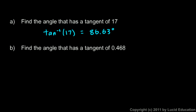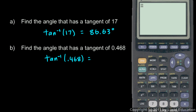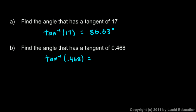For part b: find the angle that has a tangent of 0.468. That would be the inverse tangent of 0.468. On the calculator, the inverse tangent of 0.468, press enter, gives 25.08 degrees. Pretty easy — if you know the tangent of the angle, you can find the angle. We were told the tangent of the angle was 0.468, so we take the inverse tangent of that and the calculator gives us the angle.